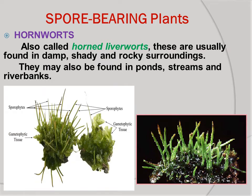The spores of hornworts are stored in the sporangium, which is a horn-like cylinder that splits upon maturation to scatter spores.